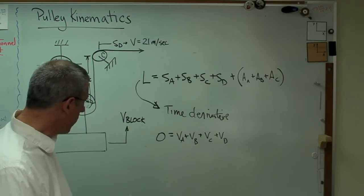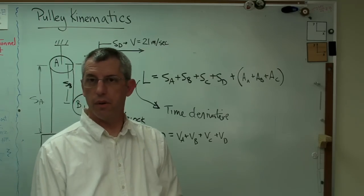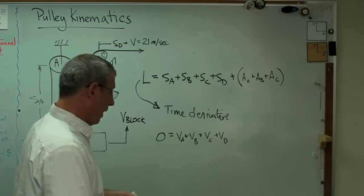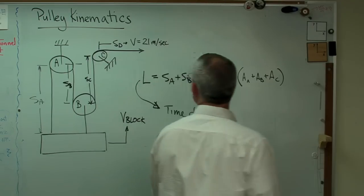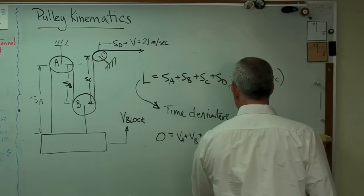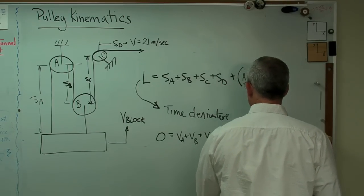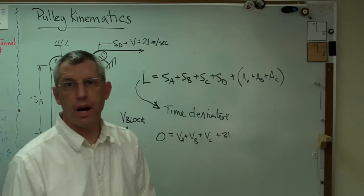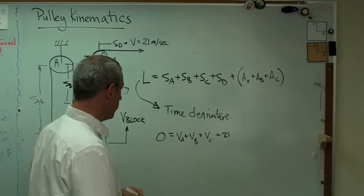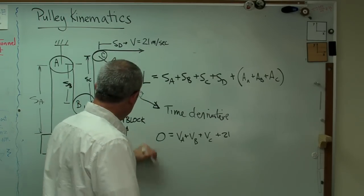Well, it looks to me like I have four variables, four velocities, and one equation. That's tough. That's because this is 21 meters a second, so I can write in 21 there. Now I've got three variables in one equation. I'm just as screwed as I was, except that...